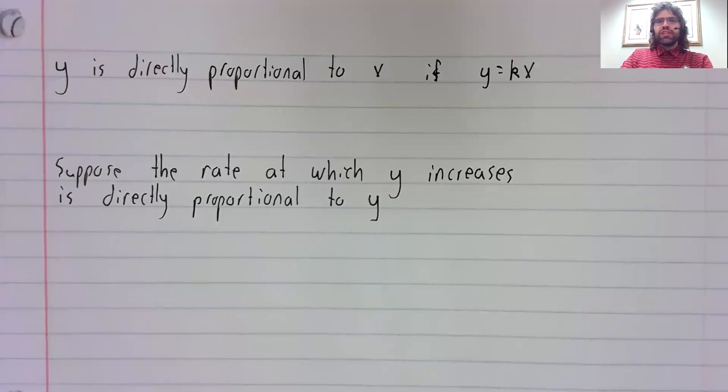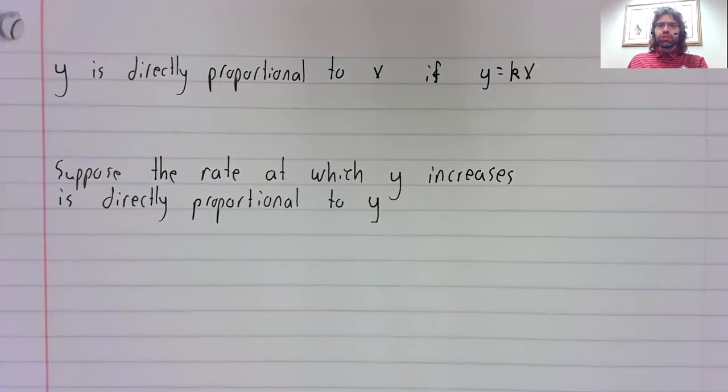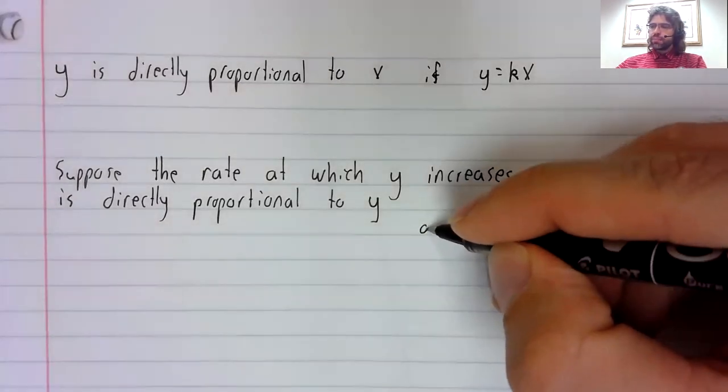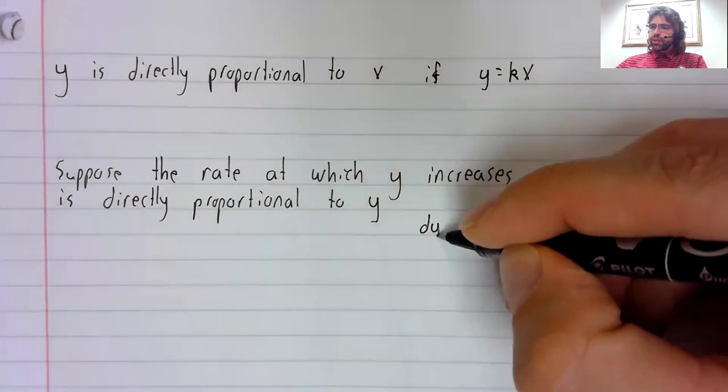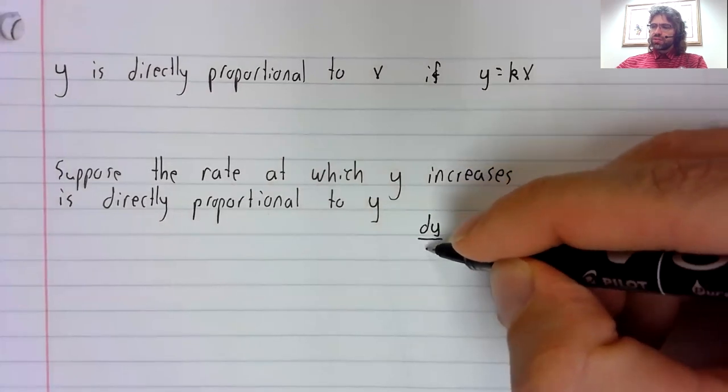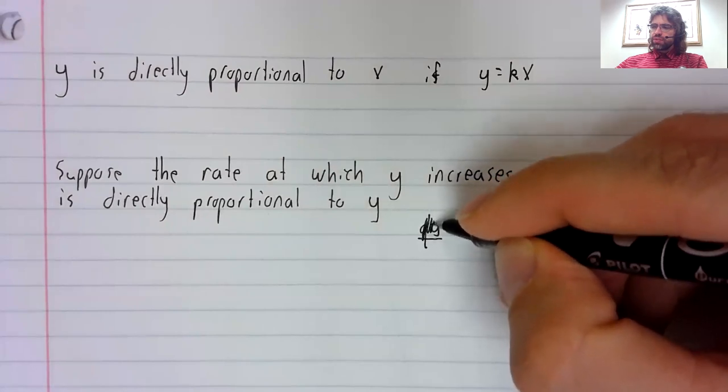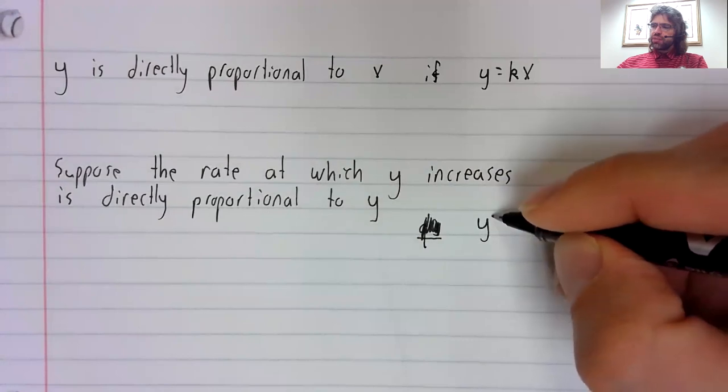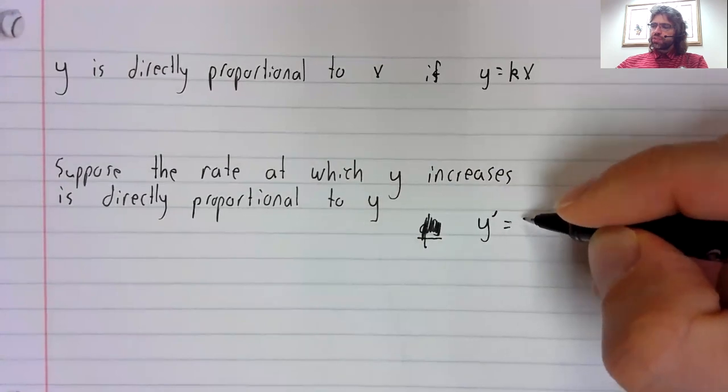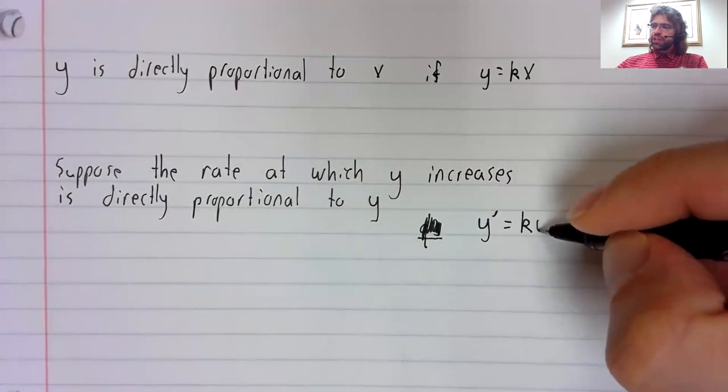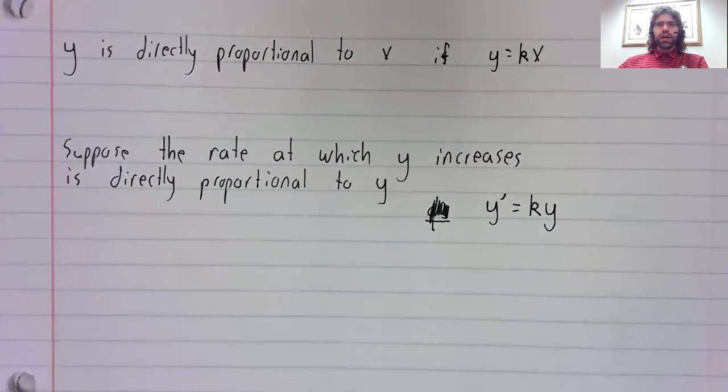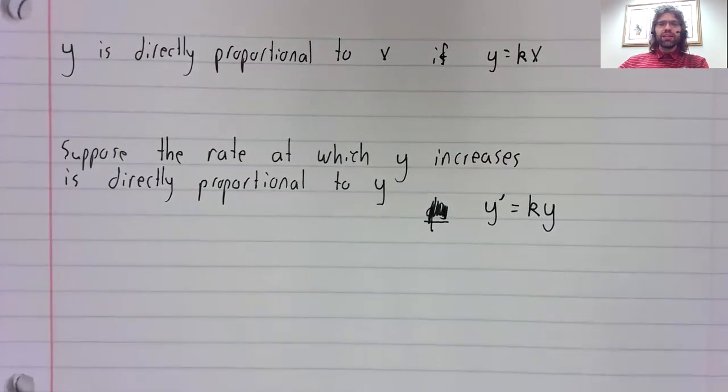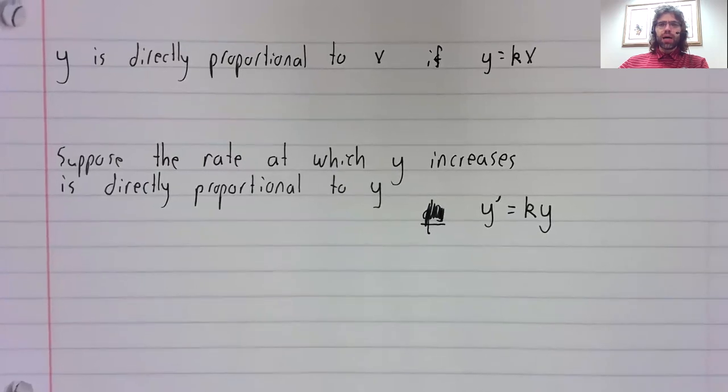If the rate at which y increases is directly proportional to y, let me use prime notation, that's a statement about the derivative: y prime equals k times y.